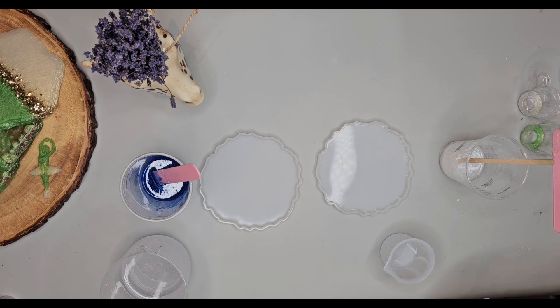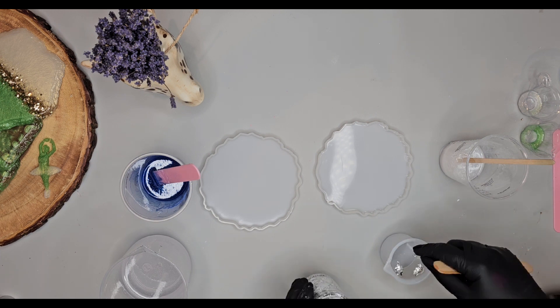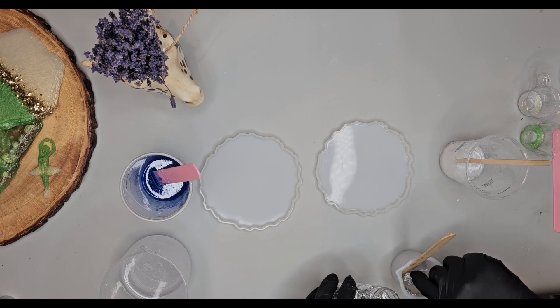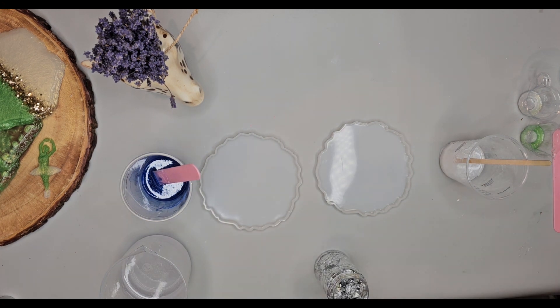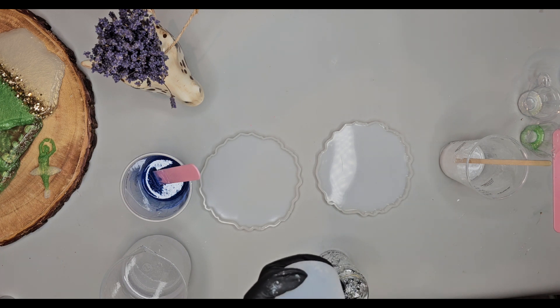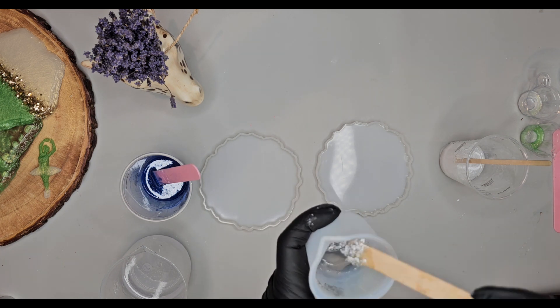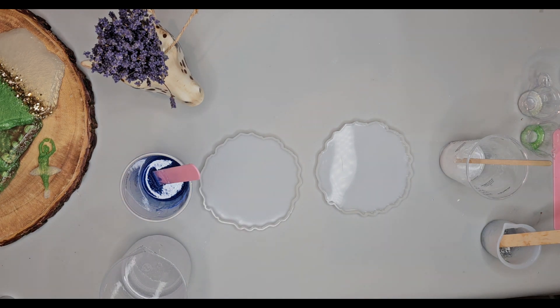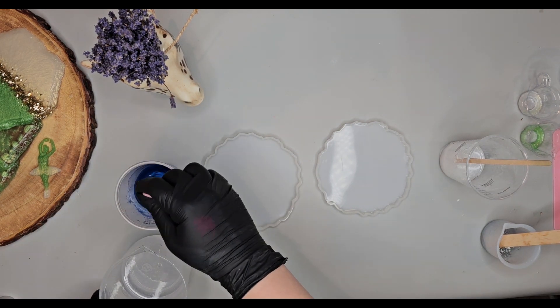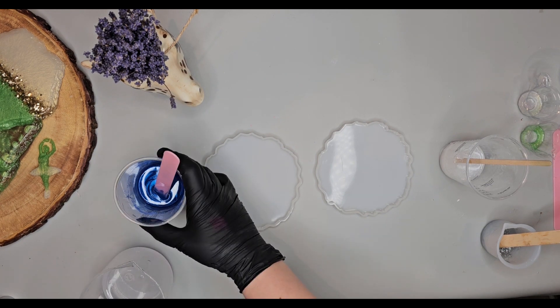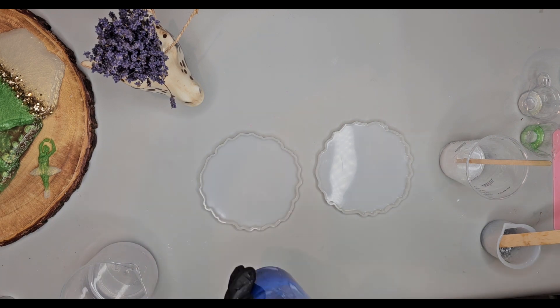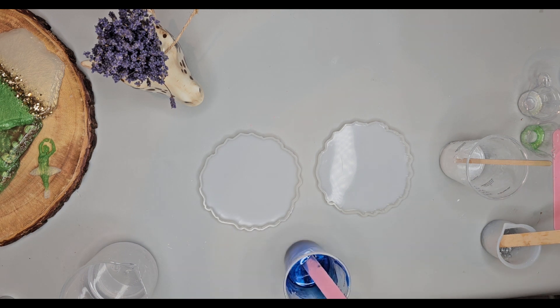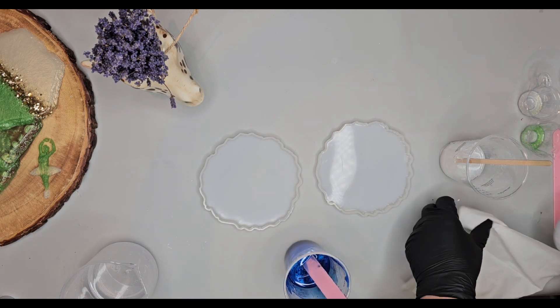And for the last one, we are going to use some silver foil. So I'm just mixing it with resin. With the foil, again just make sure it's nice and mixed so there's no big clumps. With the foil, you can go as creative as you like. You can put a lot of foil in there, you can mix different colors of the foil, you can add some sparkles, you can add some gems. Whatever ideas you have, you can implement them.